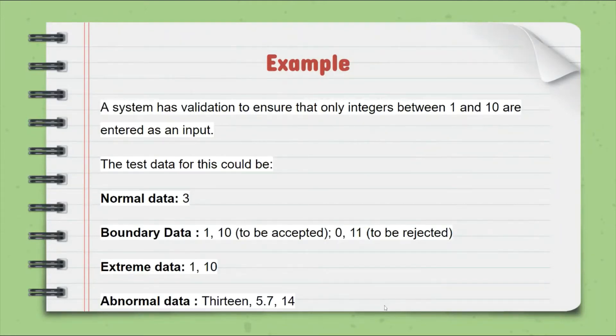An example is the system has validation to ensure that only integers between 1 and 10 are entered as an input. The test data for this could be normal data is 3 since 3 lies in between 1 and 10.